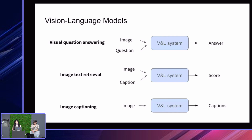Vision language models are used for a wide range of different tasks. This can vary from visual question answering, where you want the model to accurately answer questions about the image. This can also be used for image text retrieval, where you can use text and retrieve images that are relevant for the text, or also for image captioning, where you give as input the image and ask the model to give you a caption with a descriptive representation of what's happening in the image.